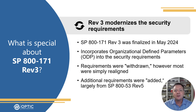So what is so special about Revision 3? First, Rev 3 was developed using the NIST 800-53 Revision 5 security and privacy controls. Rev 3 of 171 is taking an initial step to more closely align with the SP800-53 moderate baseline and streamline these security controls and requirements.